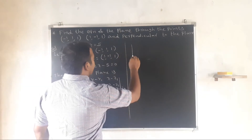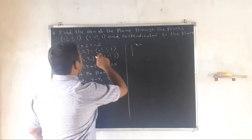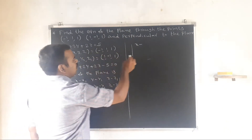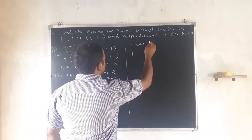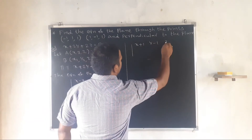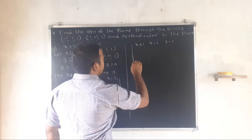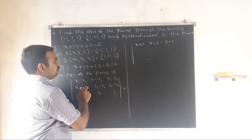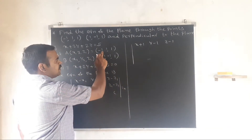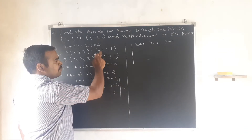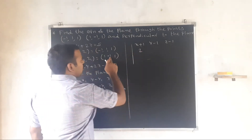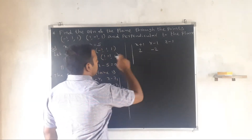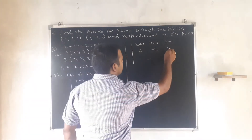Substituting: first row is (x plus 1, y minus 1, z minus 1). Second row: x2 minus x1 equals 1 minus (-1) equals 2; y2 minus y1 equals -1 minus 1 equals -2; z2 minus z1 equals 1 minus 1 equals 0.